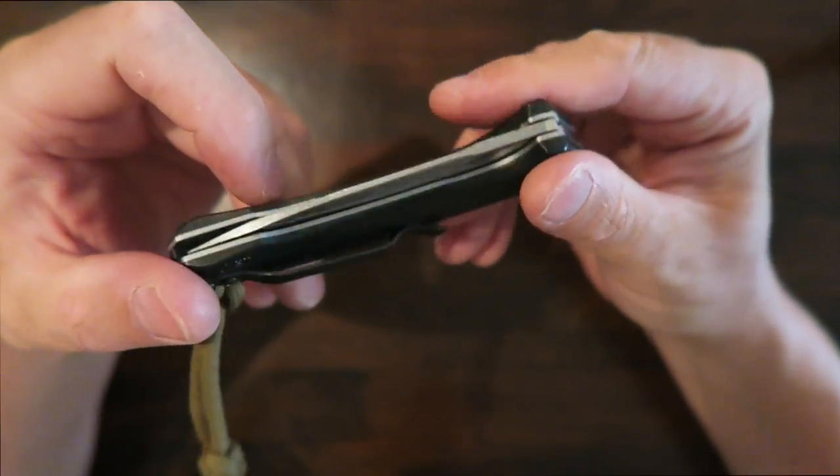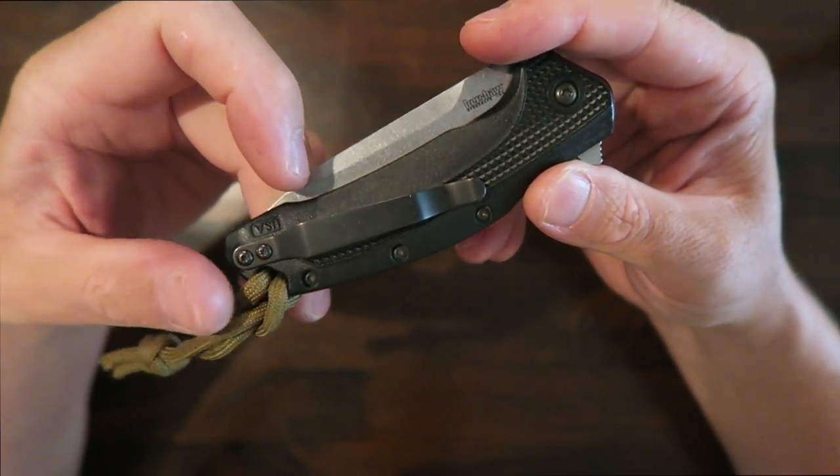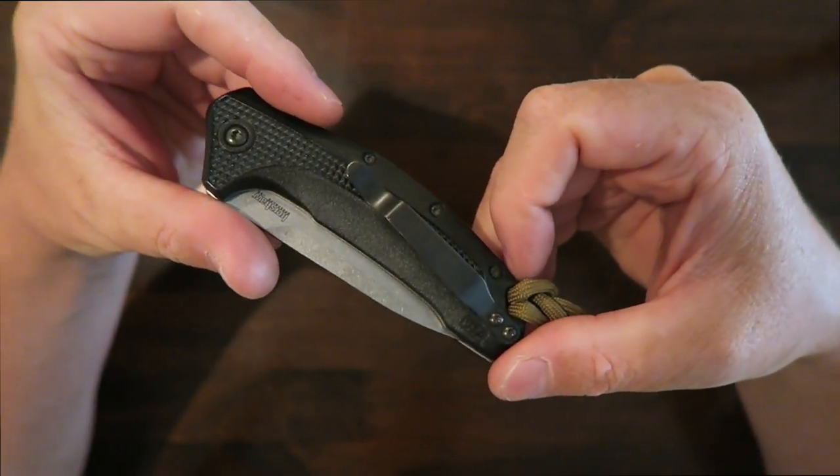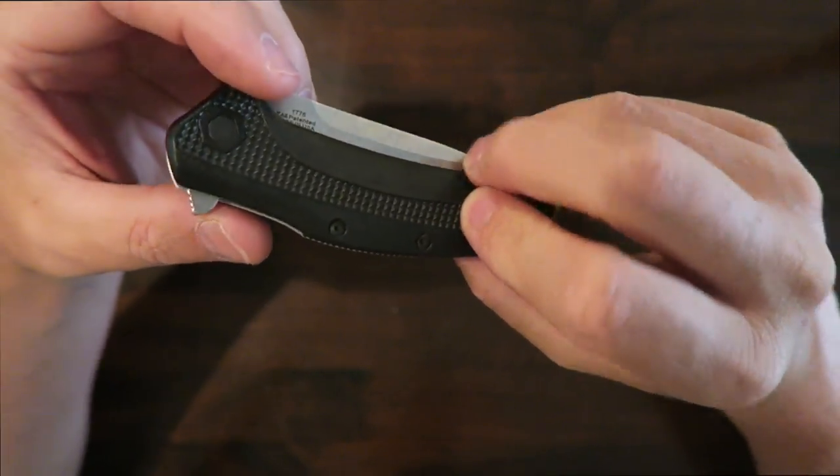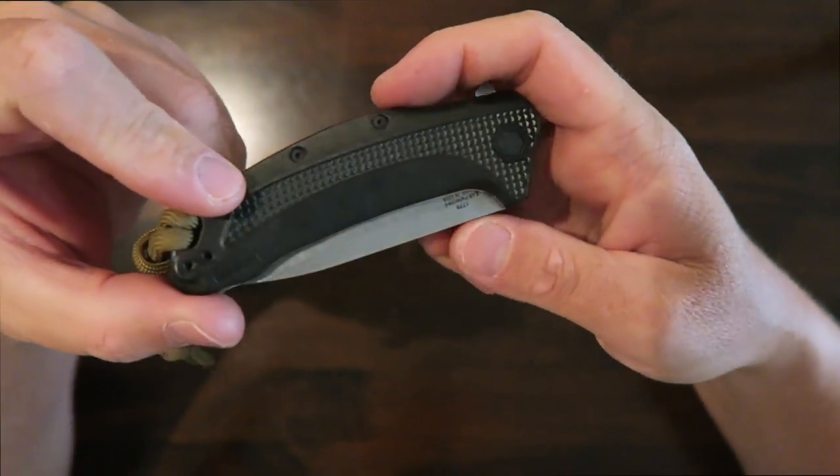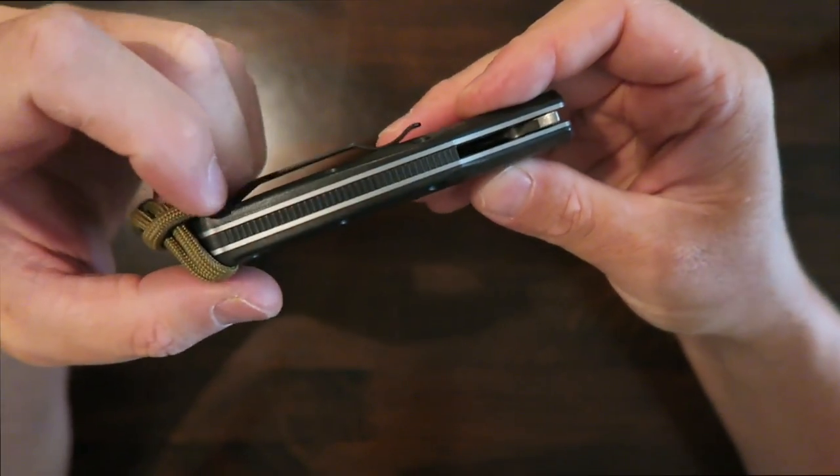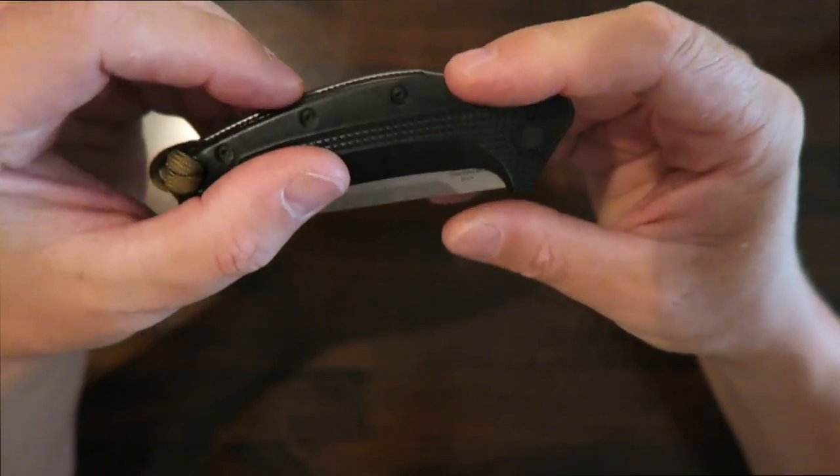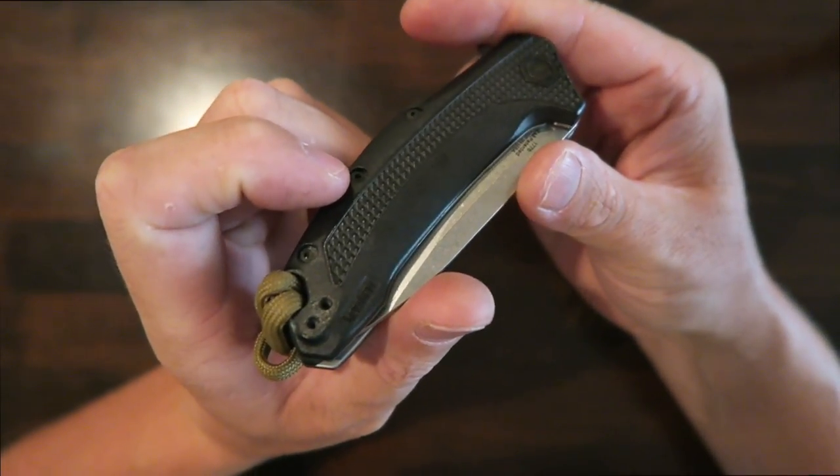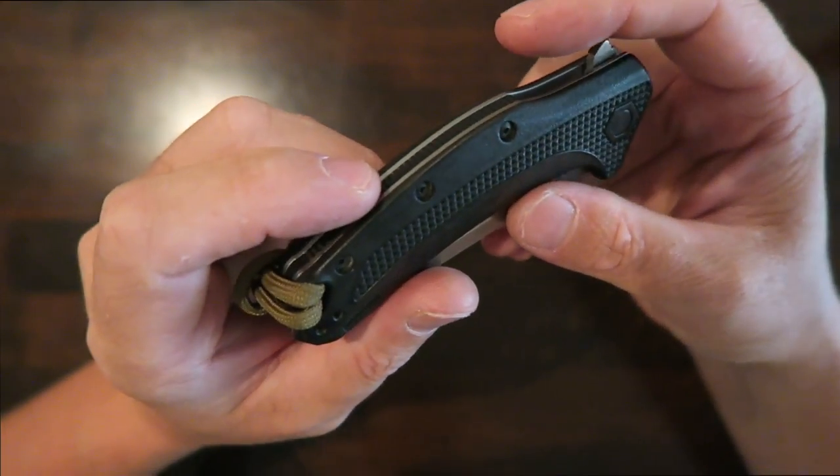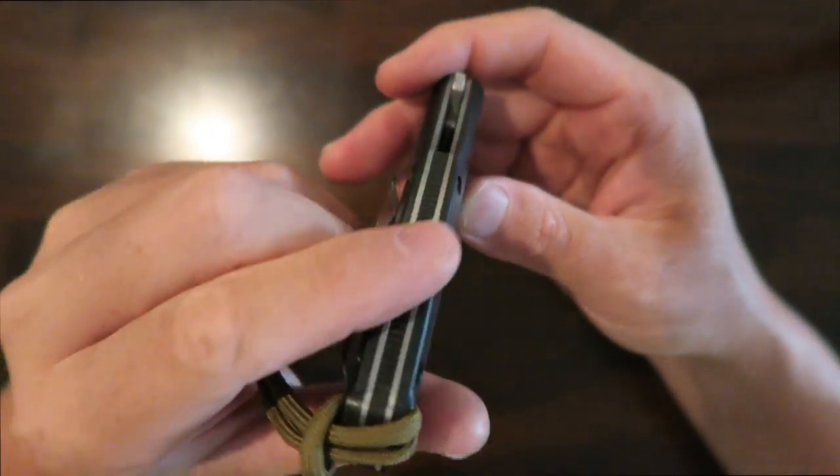Next we're going to look at the Link. Now I did an individual video review on this one. This one's made in the USA. Model number 1776. So they are very proud of this knife and they should be. It's an excellent knife. A larger knife again. It's a little bit thick but it's not quite as heavy I don't believe as the Thermite. This one is 4 ounces instead of 4.9 ounces so a little bit thinner.